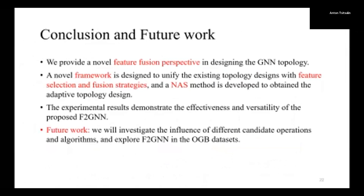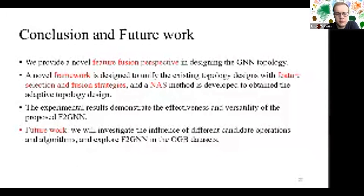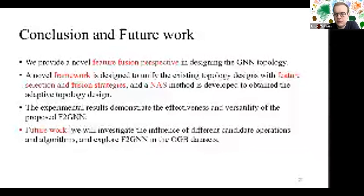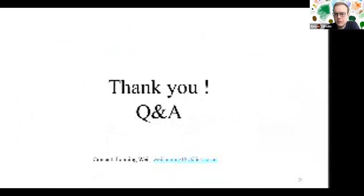As a summary, we provide a novel feature-fusing perspective in designing GNNs. A novel framework is designed to unify existing topology designs with feature selection and fusion strategies, and a method is developed to obtain adaptive topology designs. The experimental results demonstrate the effectiveness and necessity of the proposed F2GNN. In future work, we will investigate the influence of different candidate operations and algorithms and explore F2GNN on larger datasets. We have released our code on GitHub and more related works can be found on our research group page. Thank you.